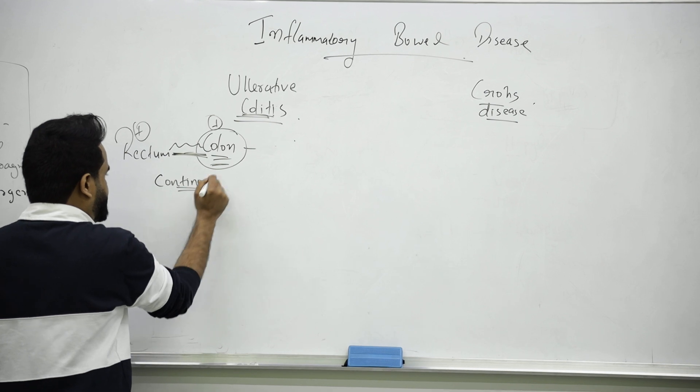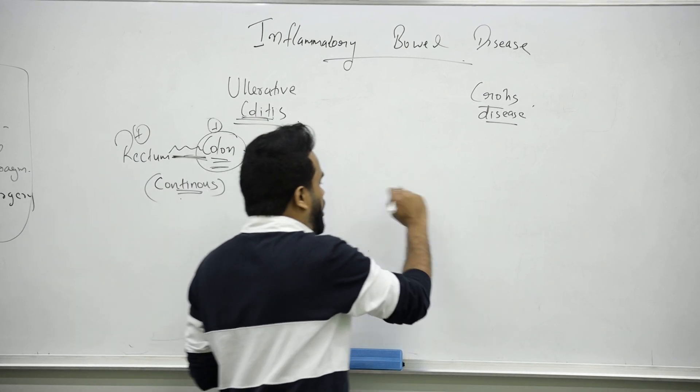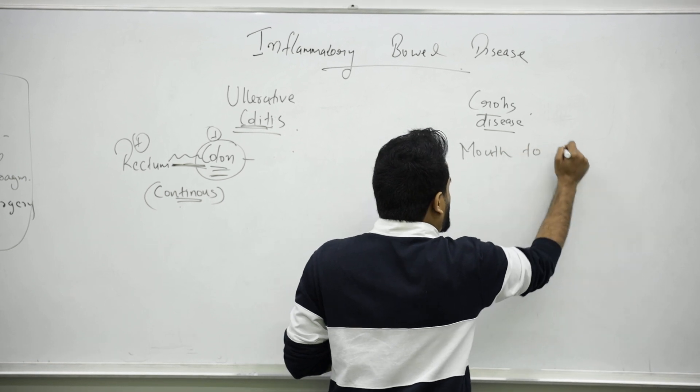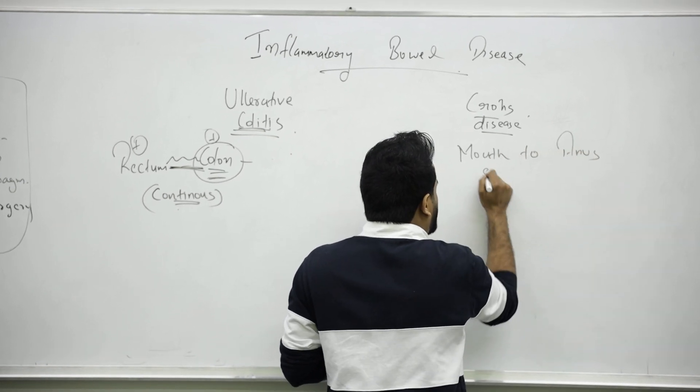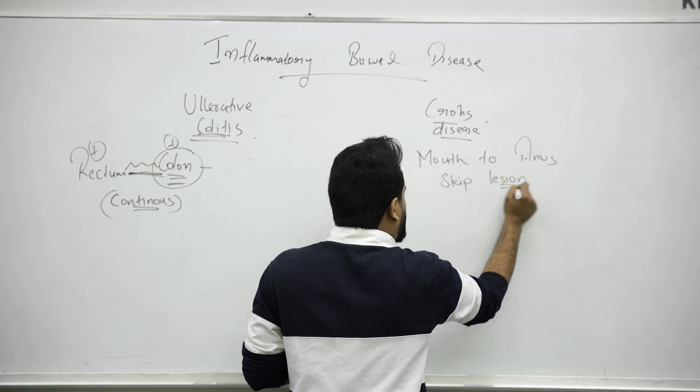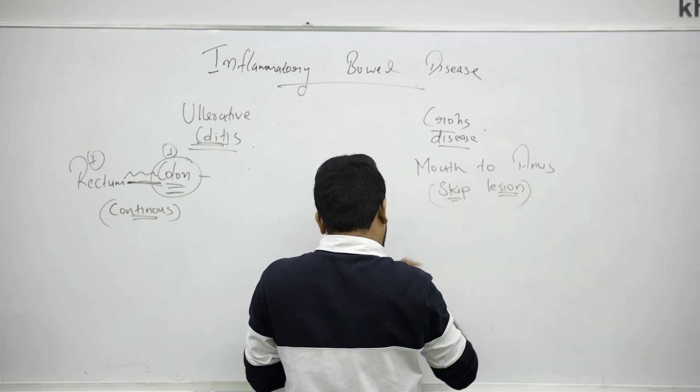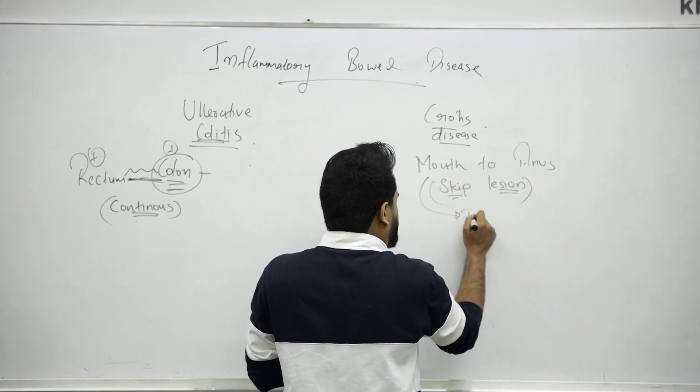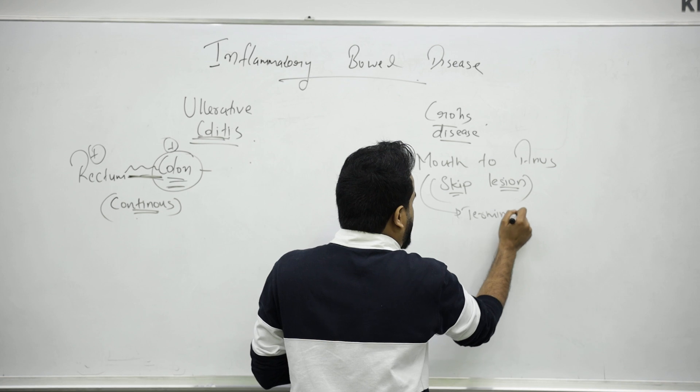Talking about Crohn's, it can be from mouth to anus, but won't be everywhere. It will be a skip lesion. But mainly, if they ask one part, we say it is terminal ileum mainly affected.